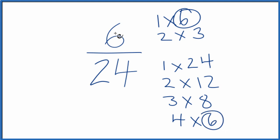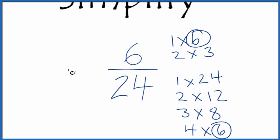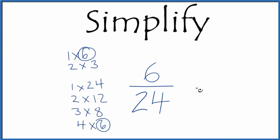If we divide 6 by 6 and 24 by 6, we'll have reduced 6/24 down to its lowest terms. Let's move this over here. 6 divided by 6 is 1. 24 divided by 6 is 4.